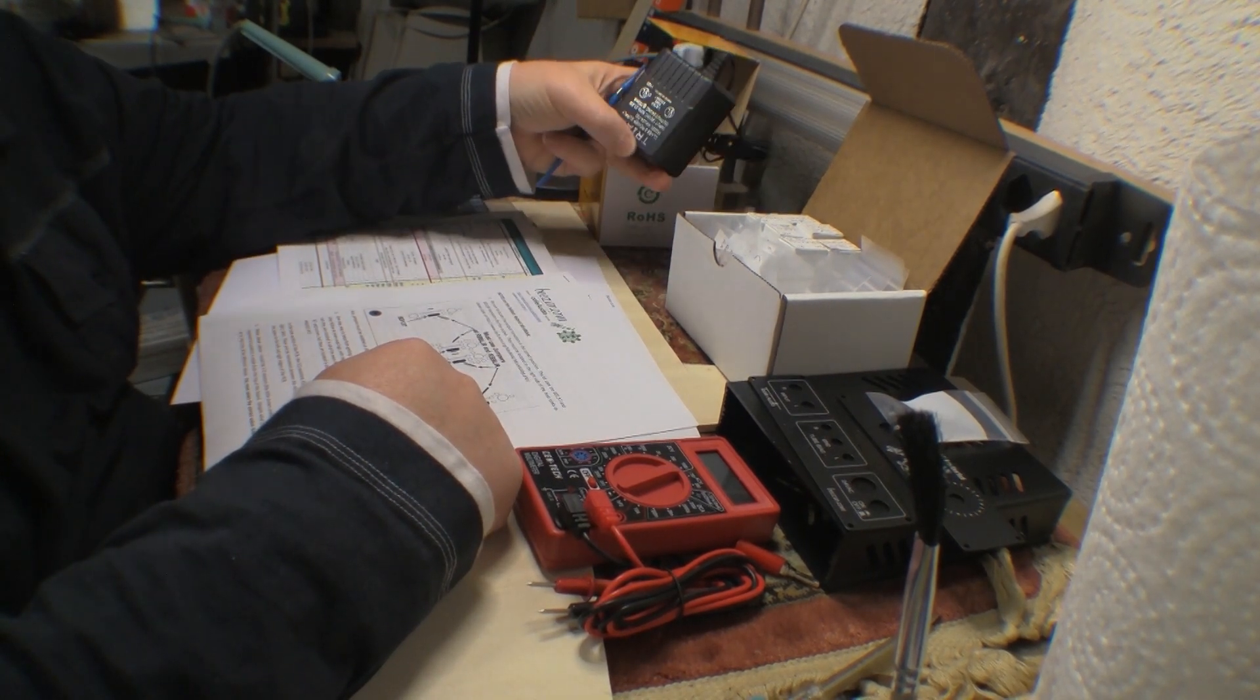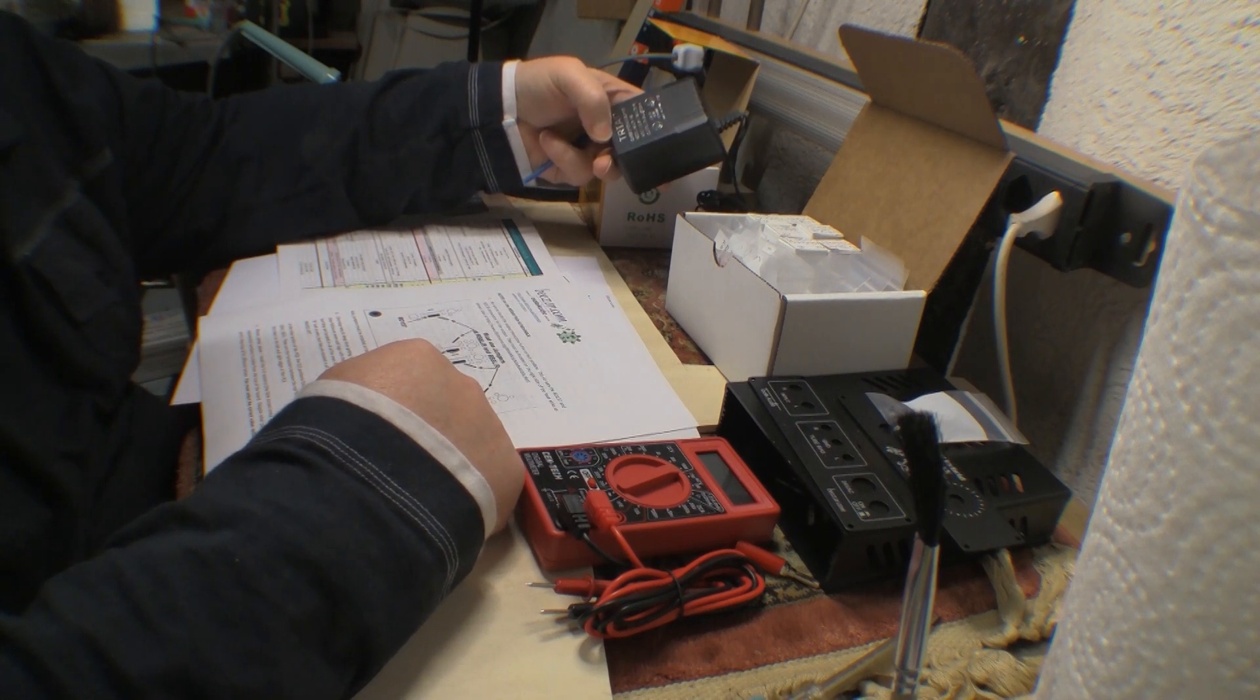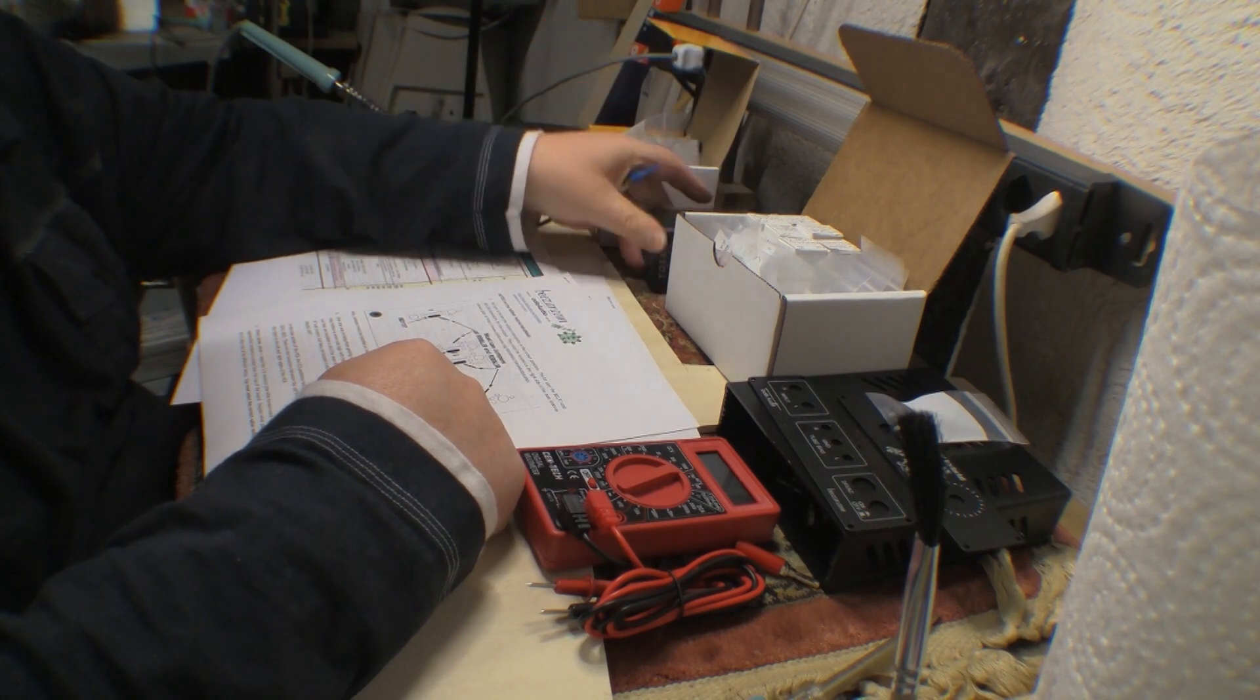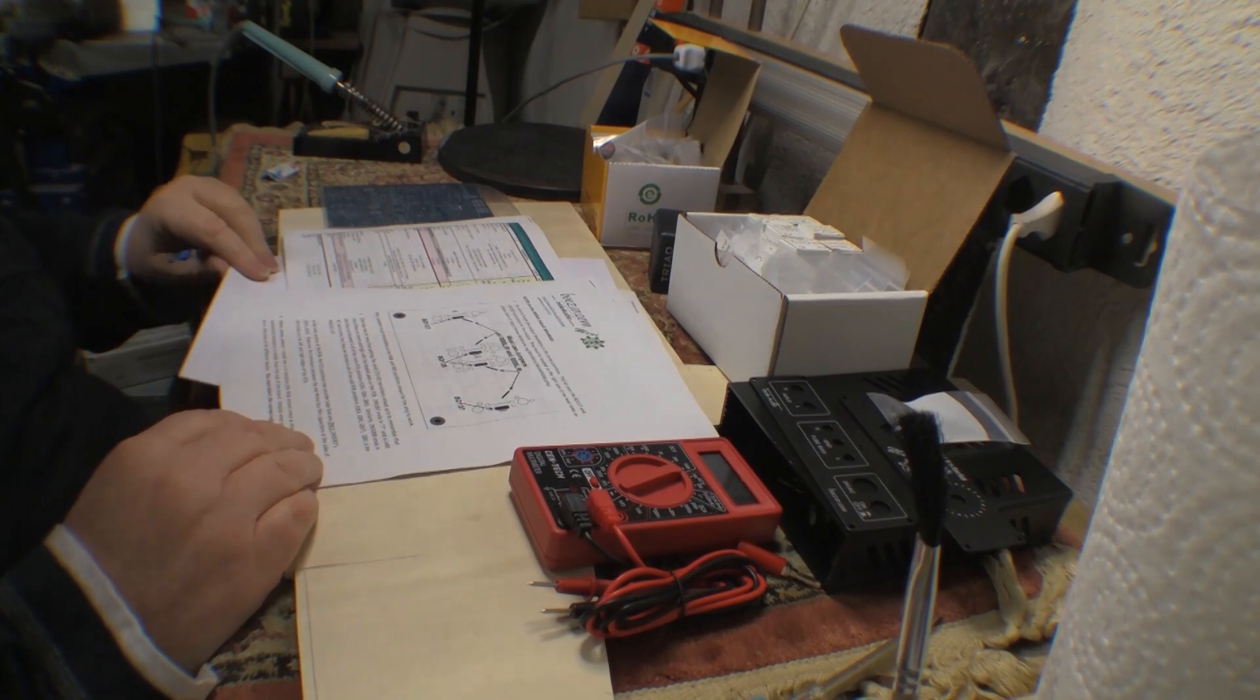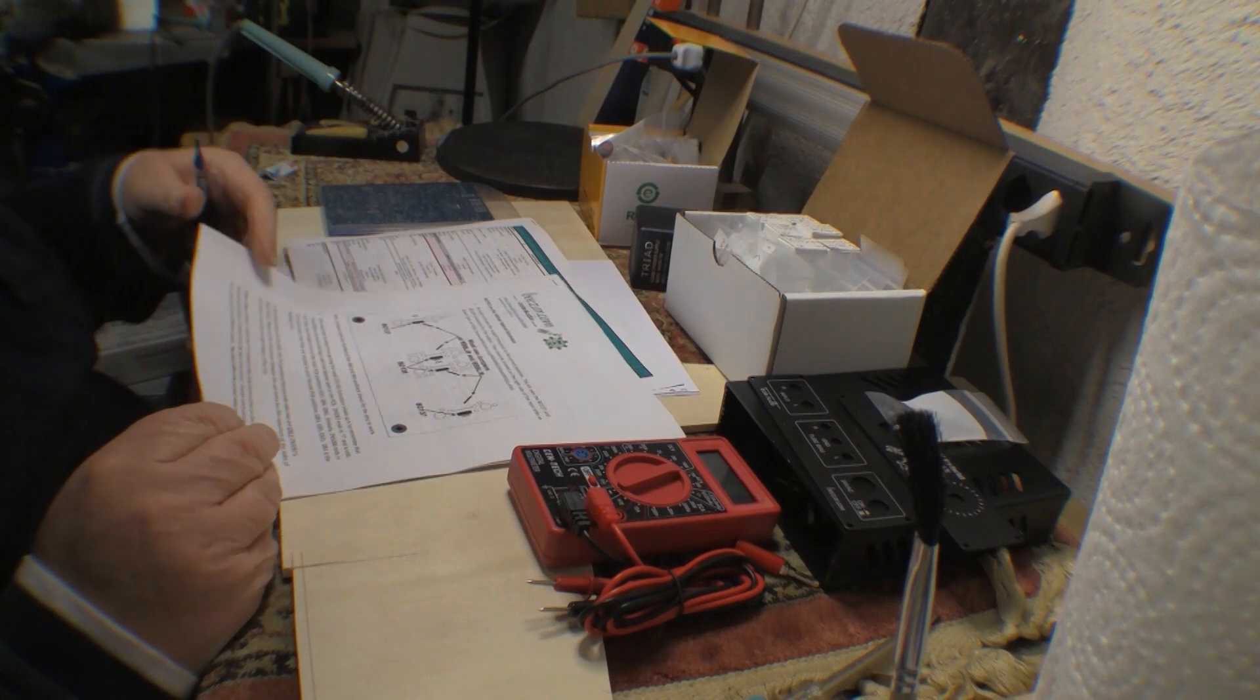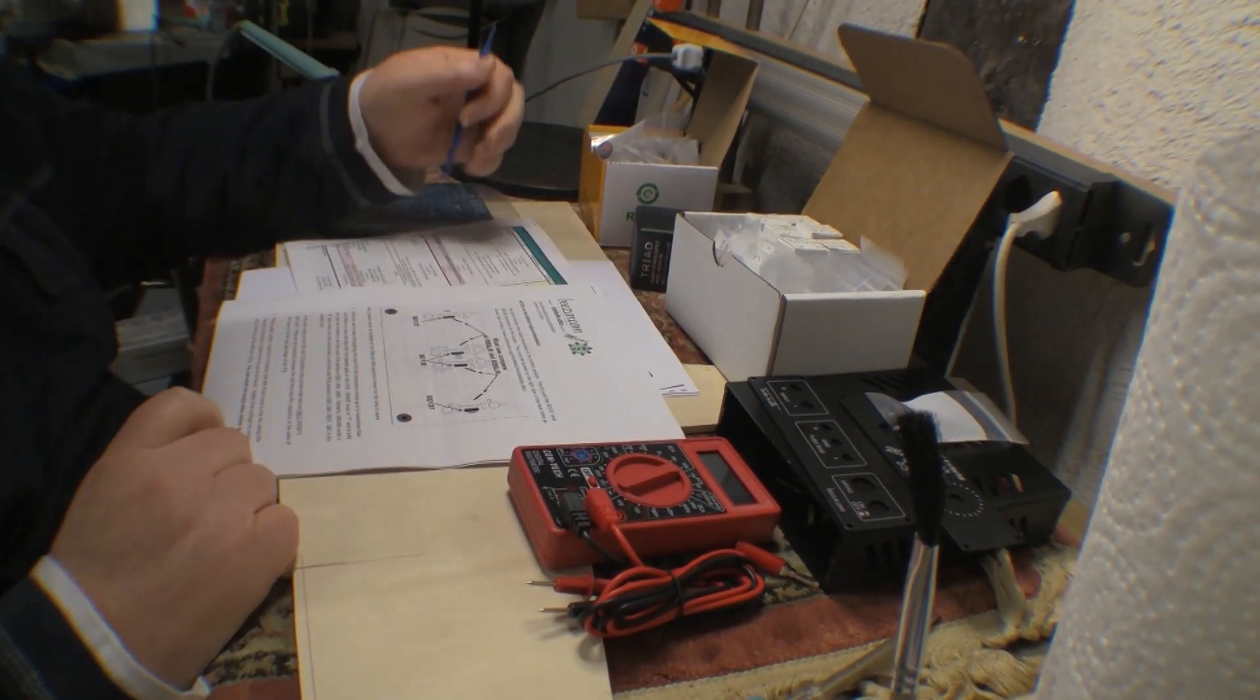The only disappointment so far is the wall wart is 115V only, or 120V. I would kind of assume most wall warts would be universal these days. It would take either side of the pond. So I mean I can put it in the variac when the time comes, but yeah, that's the only disappointment so far.